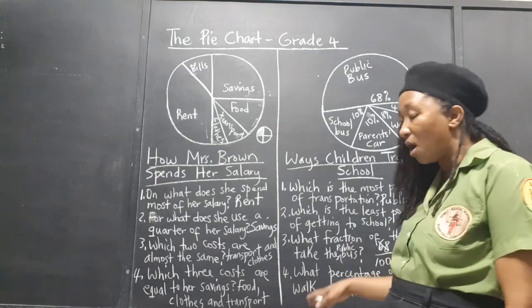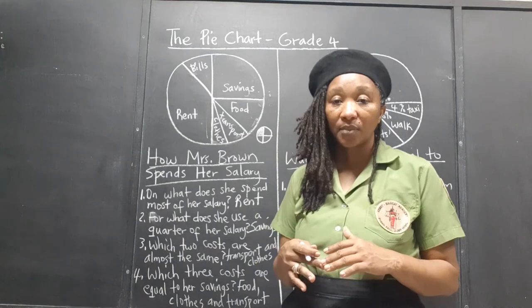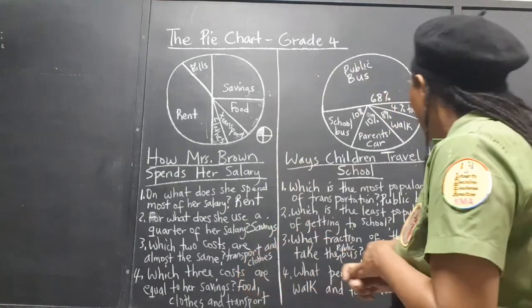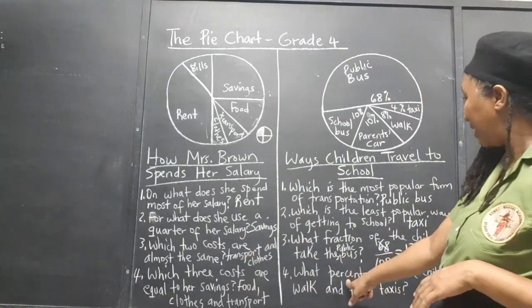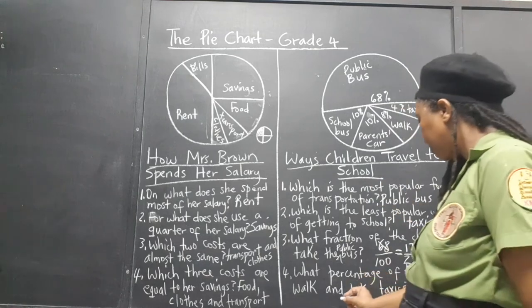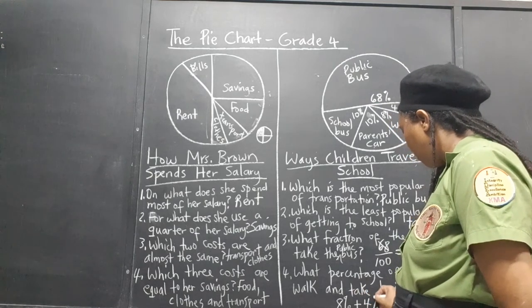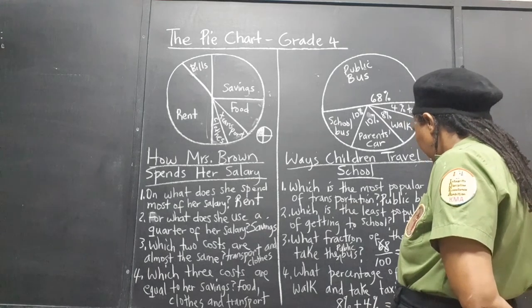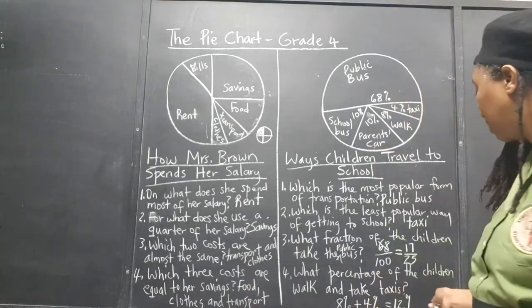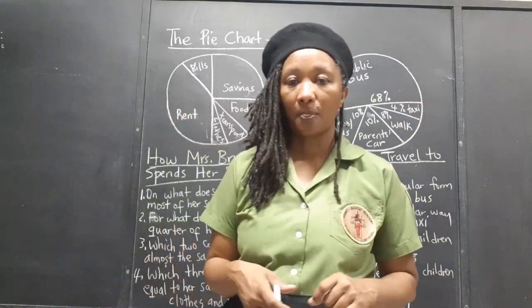What percentage of the children walk and take taxis? They're asking us to combine two categories. 8% walk and 4% take the taxi. 8% plus 4% gives 12%. So 12% of the children walk and take taxis combined.